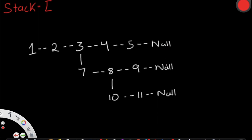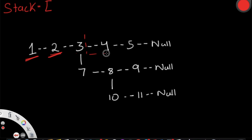Let's see how we can flatten this multi-level linked list. We're going to implement a stack and iterate through our linked list. We go to the head and check if it has any children nodes — the first two nodes don't. But once we get to node 3, it has a child node. We take the right side and put it in our stack, then point node 3's next to node 7, and node 7's previous back to node 3.